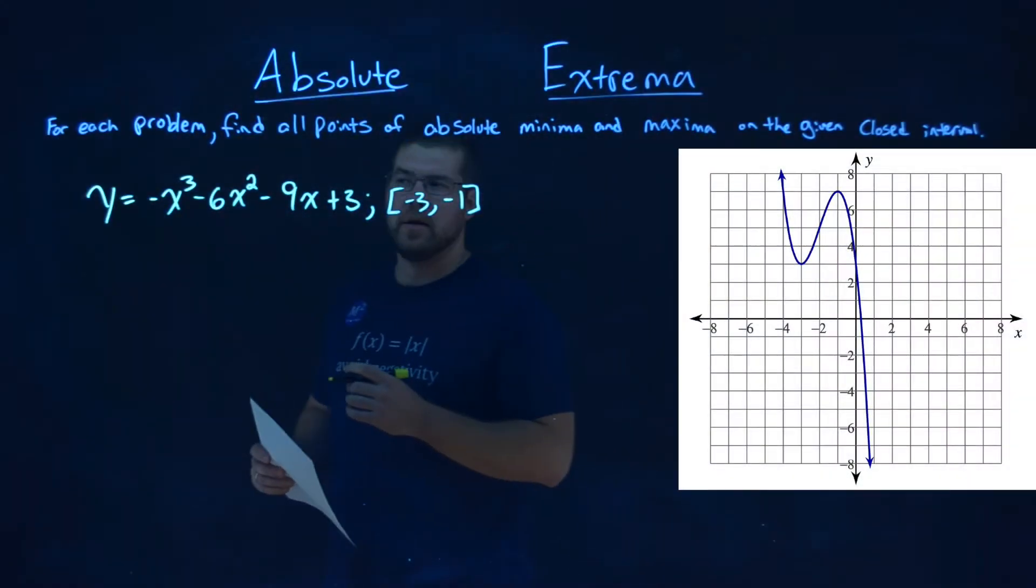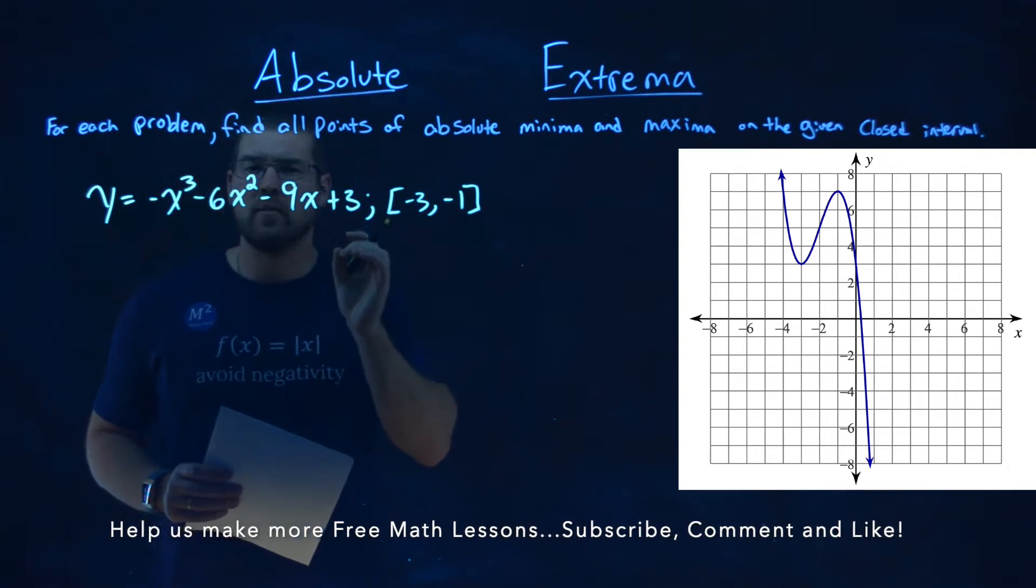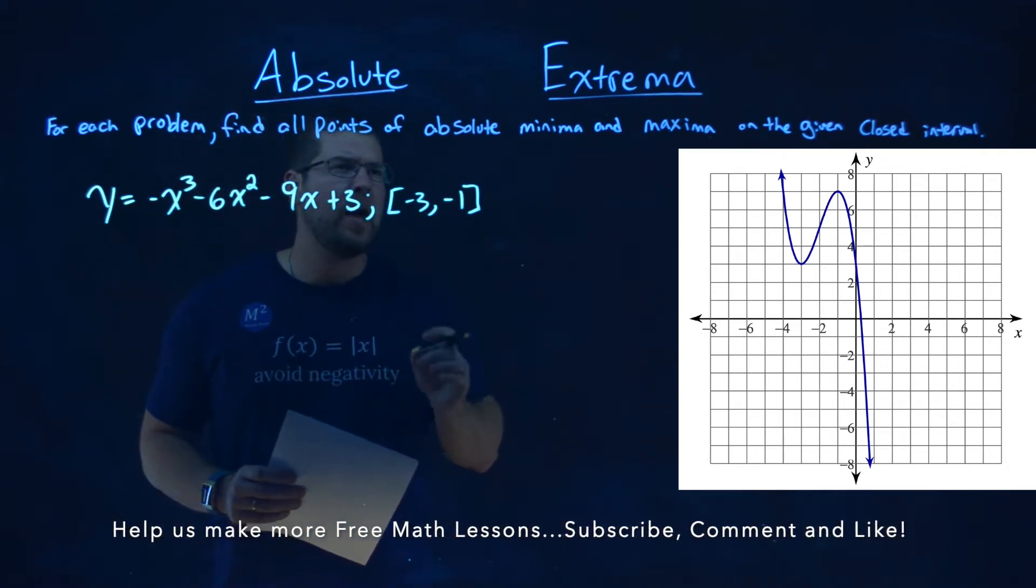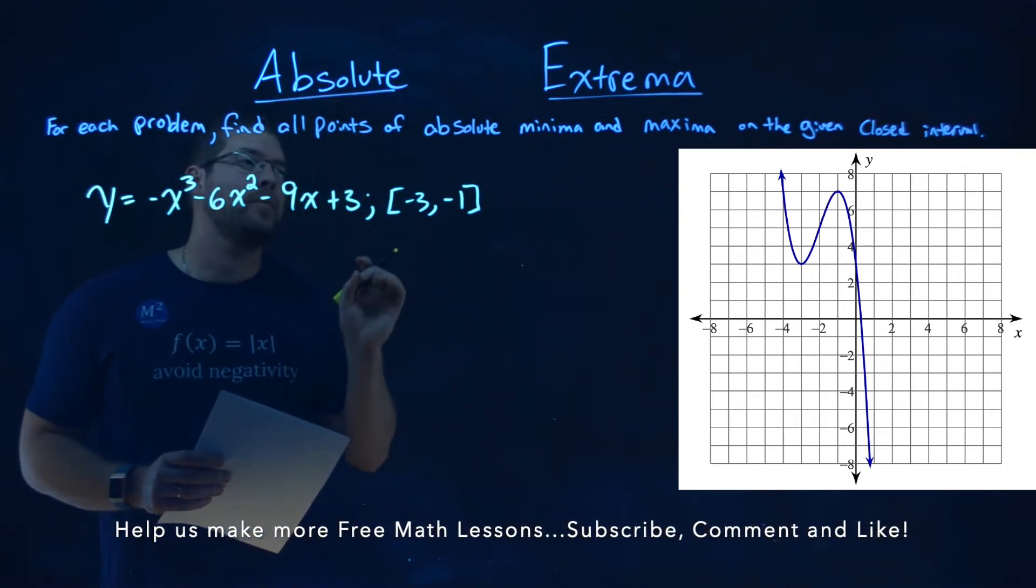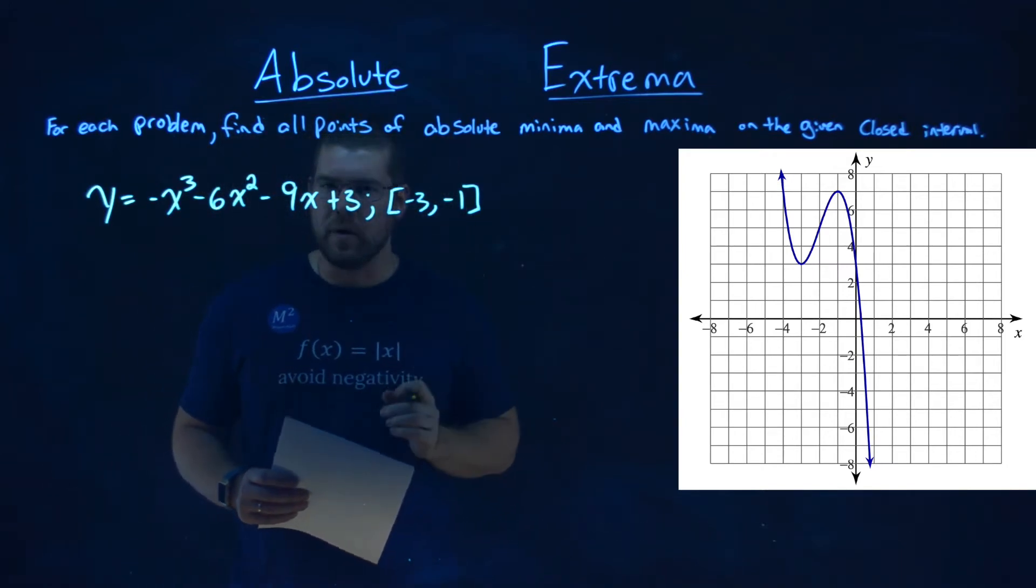We're given this problem right here: y equals negative x to the third power minus 6x squared minus 9x plus 3, and we want to find the points of absolute minima and maxima on our closed interval from negative 3 to negative 1.